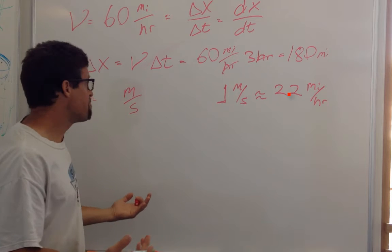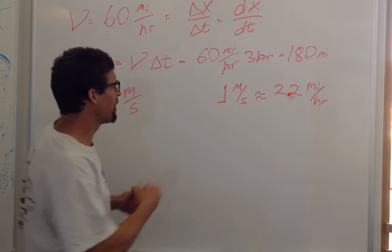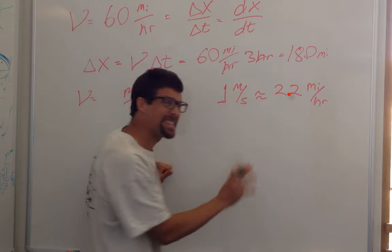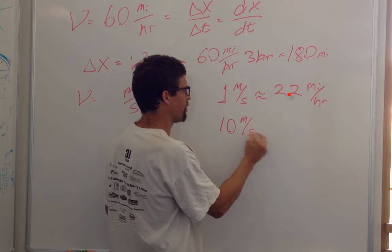Okay, so how about other speeds? Like how fast can we run? Well, then, if we could run, the fastest people can run about 10 meters per second.